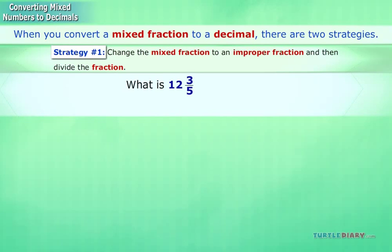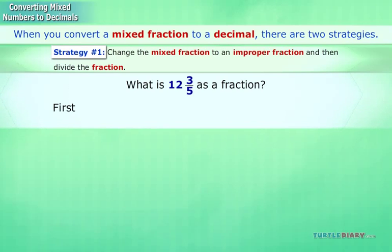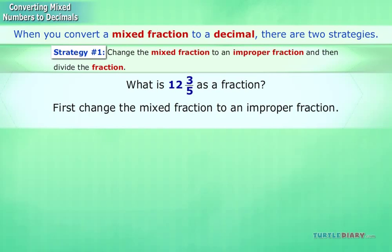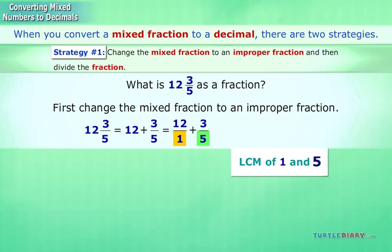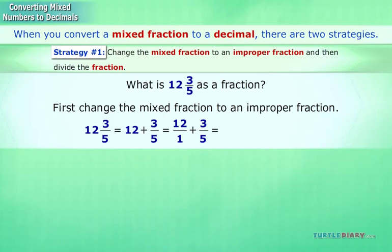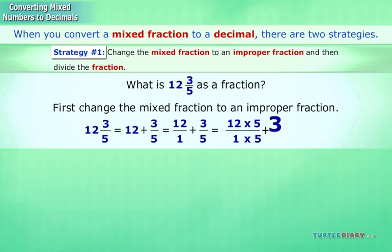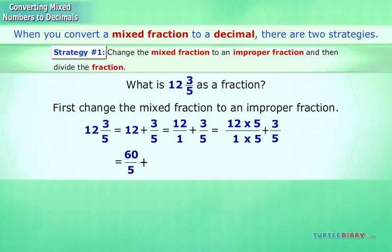What is 12 and 3 fifths as a decimal? First, change the mixed fraction to an improper fraction. 12 and 3 fifths equals 12 plus 3 fifths, which equals 12 over 1 plus 3 fifths. We multiply both the numerator and denominator in 12 over 1 by 5, giving us 60 fifths plus 3 fifths, which equals 63 over 5.